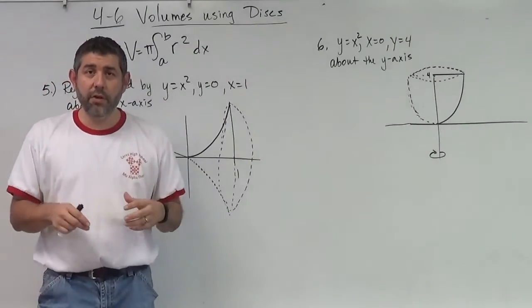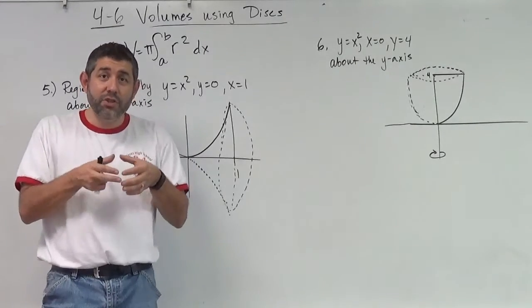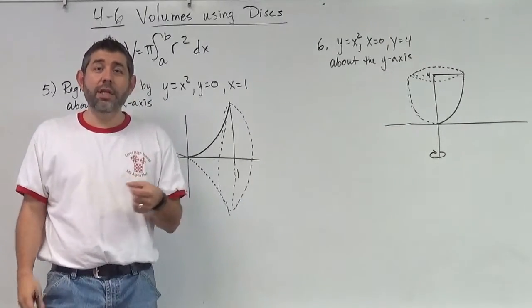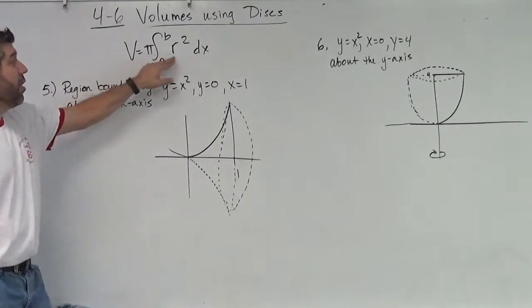The volume of a cylinder is the area of the base, same thing, but the area of the base is a circle. So the area of that circle is pi r squared. Notice here in my volume I have pi r squared.